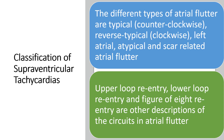Different types of atrial flutter are: typical counter-clockwise, reverse typical clockwise, left atrial atypical, and scar-related atrial flutter. Upper loop reentry, lower loop reentry, and figure-of-eight reentry are other descriptions of the circuits in atrial flutter.